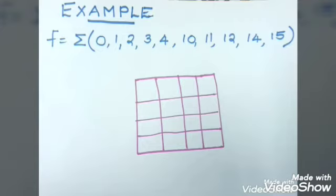This is an example of 4 variable K-Map. F is equal to 0, 1, 2, 3, 4, 10, 11, 12, 14, 15. For simplifying this problem, you draw a K-Map having 4 rows and 4 columns. Total 16 squares.